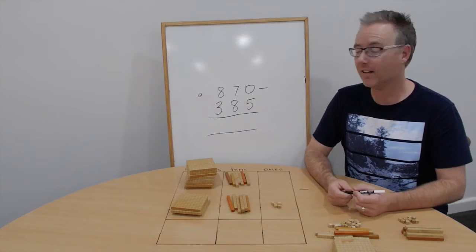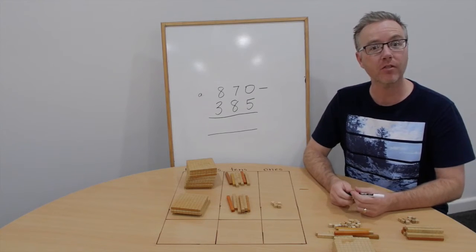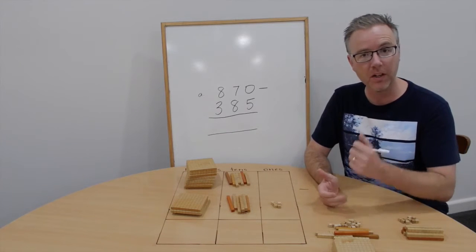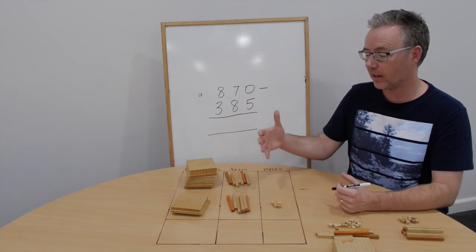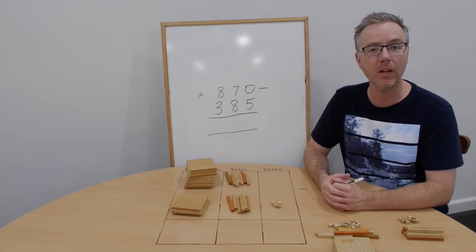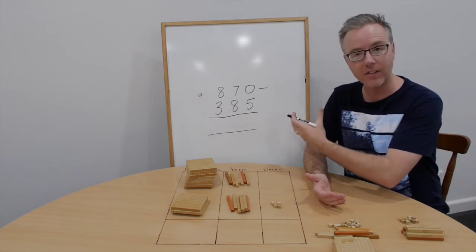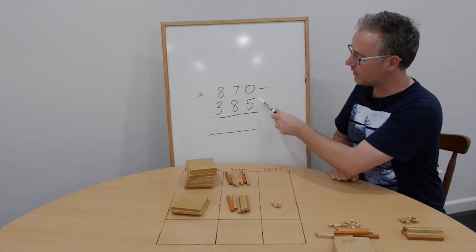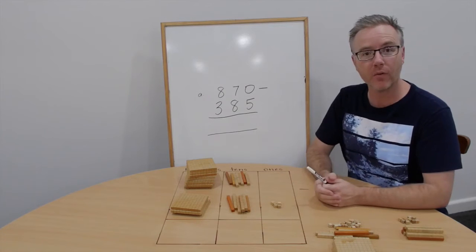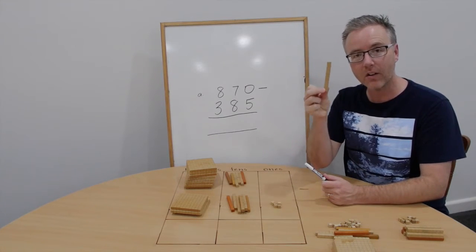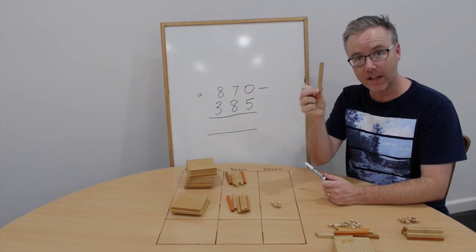So let's look at question A. 870 take away 385. You can see here I've got it out in concrete material. Please follow along. As we actually work out through the concrete material, we'll also work through the question. As I said earlier, please make sure that as I write on the board, please follow on at home. So the first thing we say is 0 take away 5. We can't do this. So what we need to do is we need to trade one of these tens for ten ones.